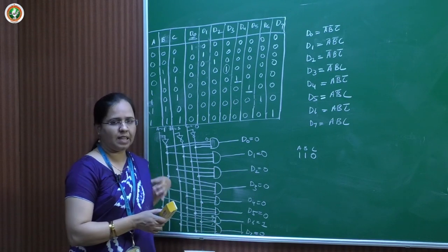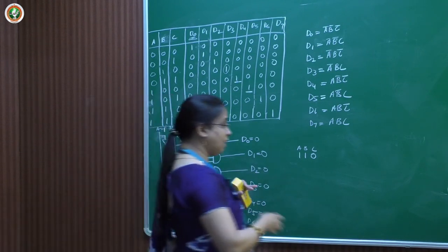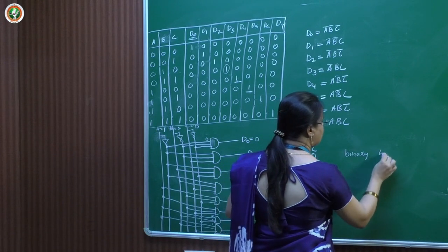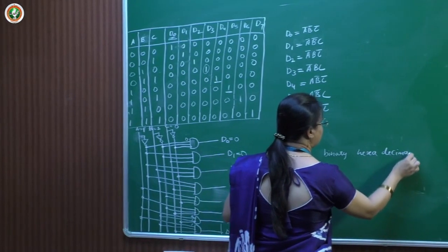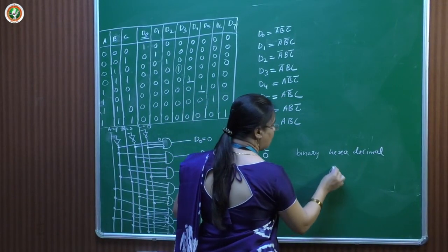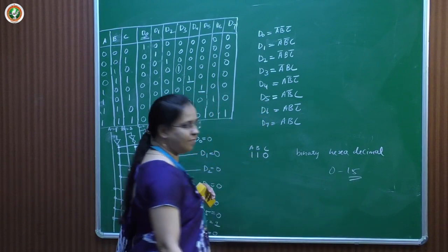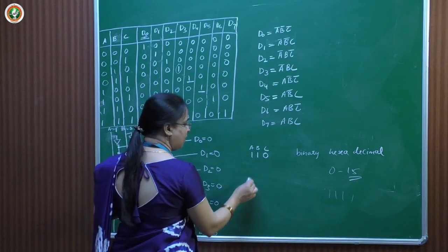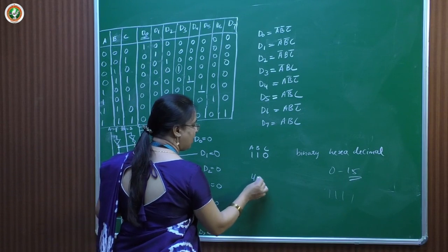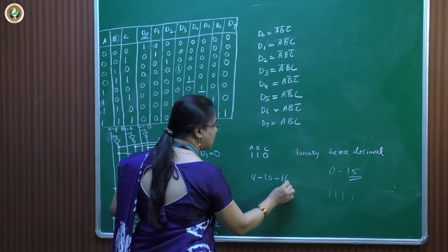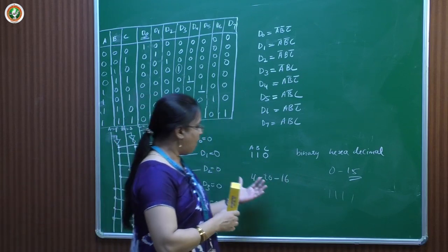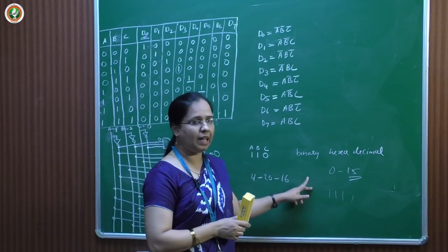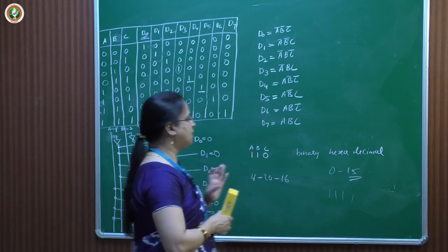In this way, different types of binary conversions can be designed. For binary-to-hexadecimal conversion, we have values 0 to 15, requiring 4-bit inputs. With 4 inputs and 16 outputs, we use a 4-to-16 line decoder for binary-to-hexadecimal conversion. The logic for decoders scales accordingly with the number of inputs and outputs required.